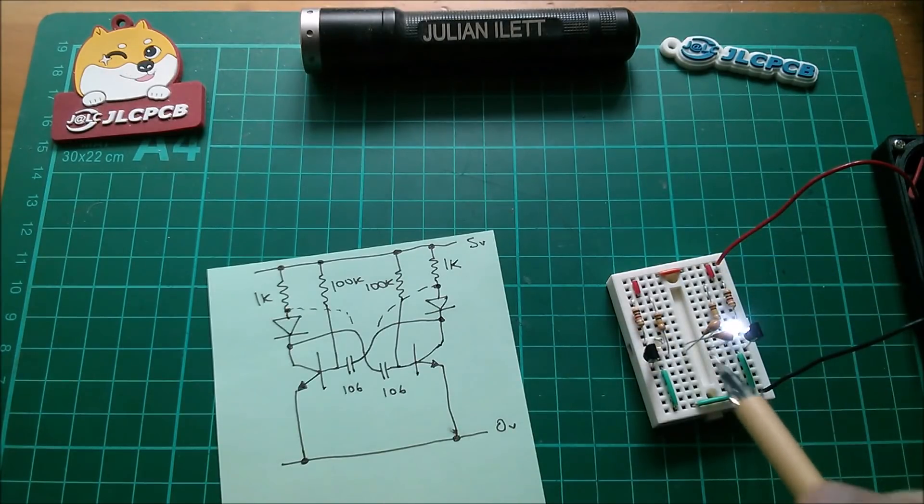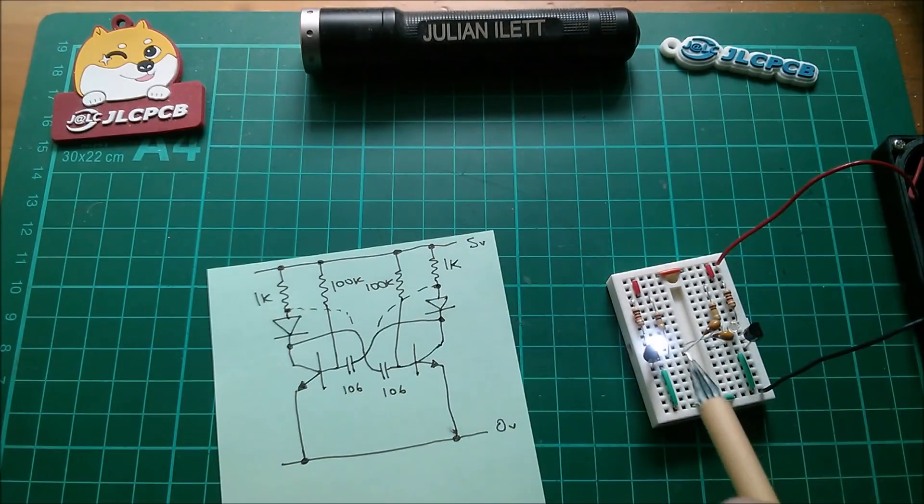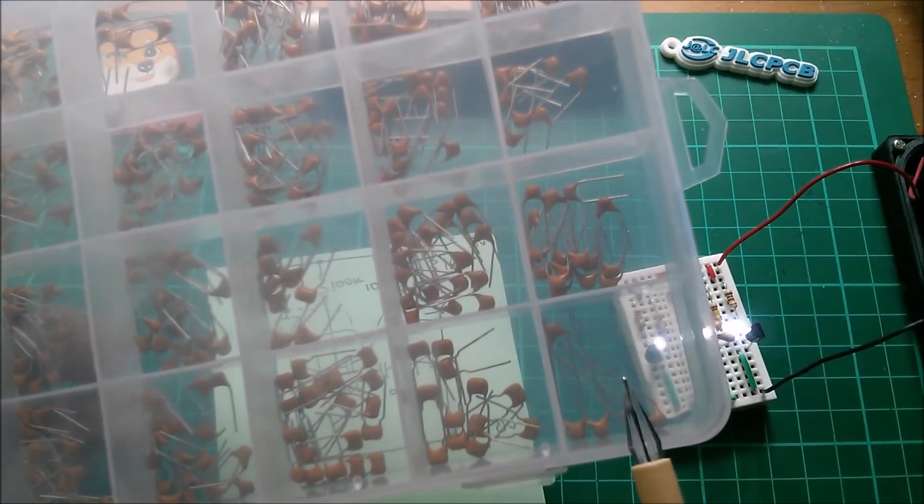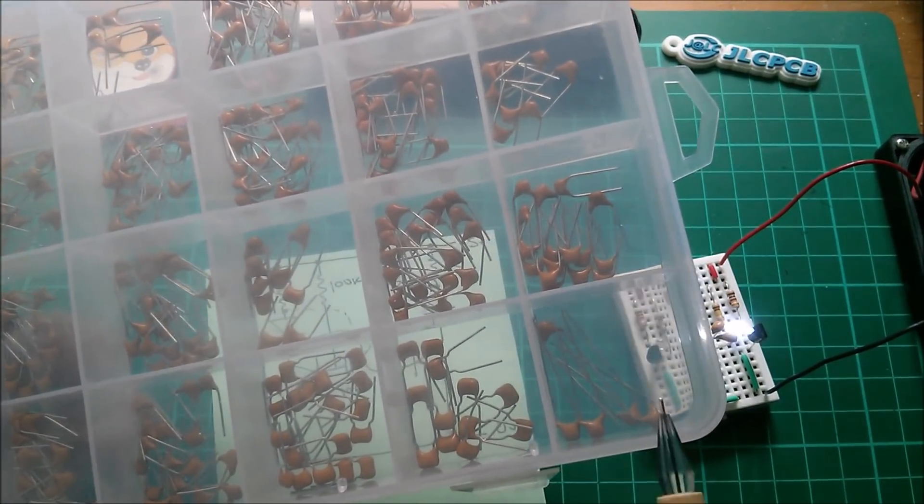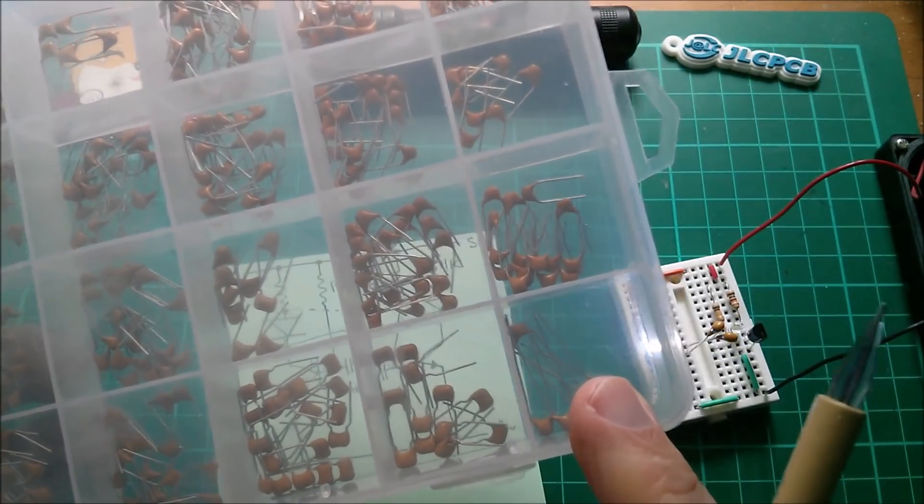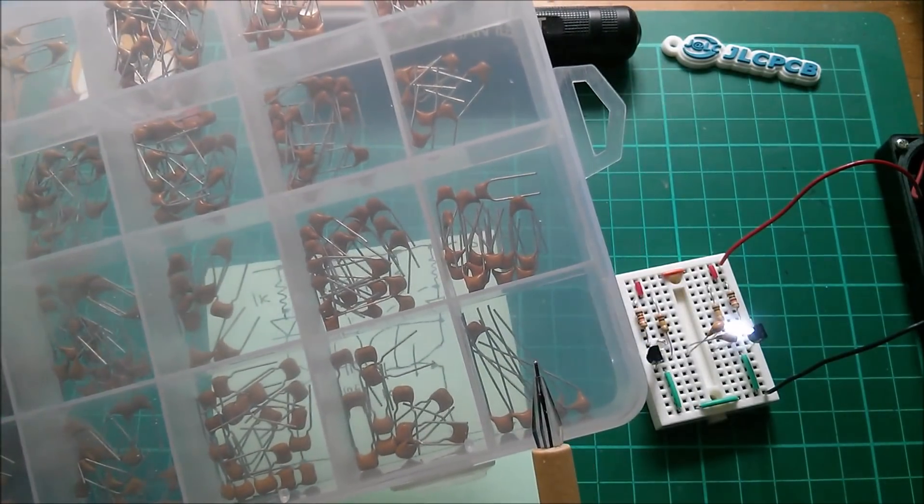Now, these are 10 microfarads. So I could go to 100 microfarads. I don't have any 100 microfarad MLCCs. Now, this is my kit of MLCCs. And the largest value is this one, which also happens to have the longest legs, which make them easy to use. And this is the 106 or 10 microfarad multi-layer ceramic capacitor.